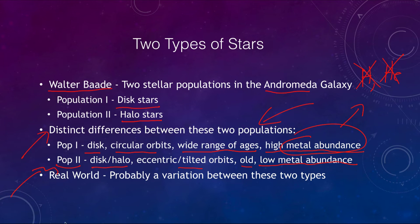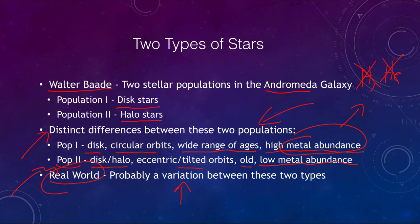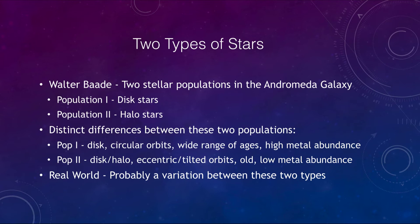Now, of course, this is an idealized situation. In the real world there is really a gradual variation between these two types of objects, but they are convenient to study. So what does this tell us about the formation of our galaxy?